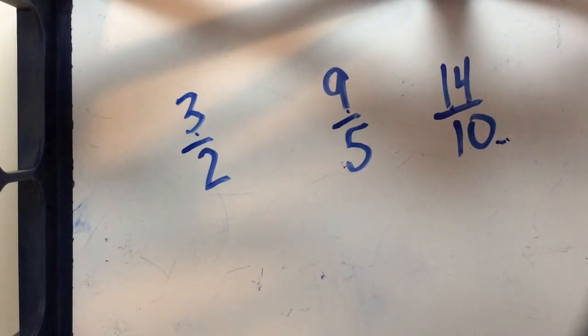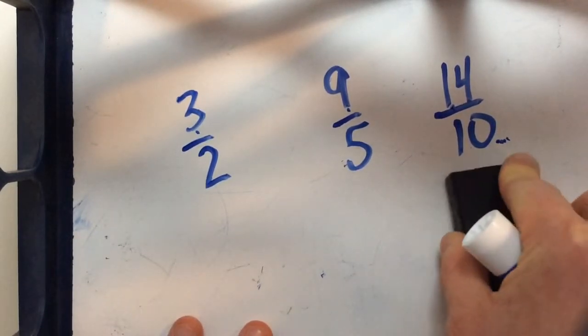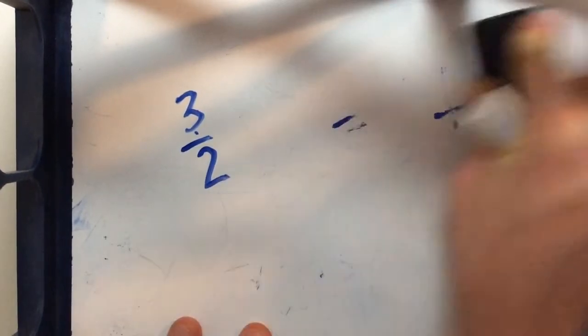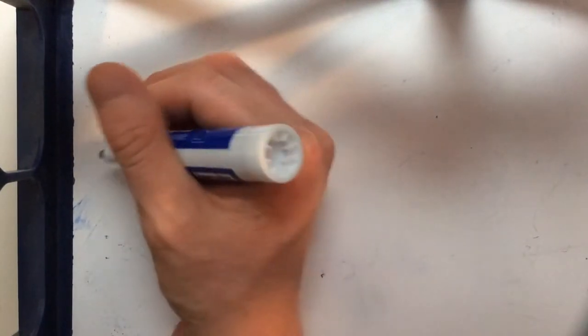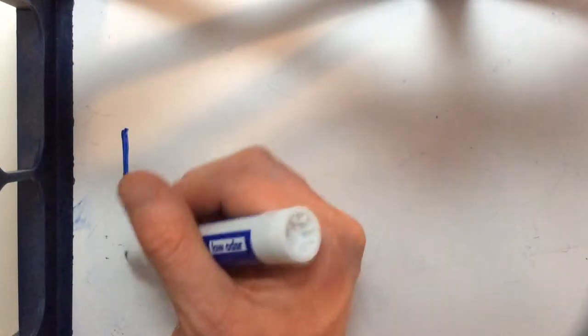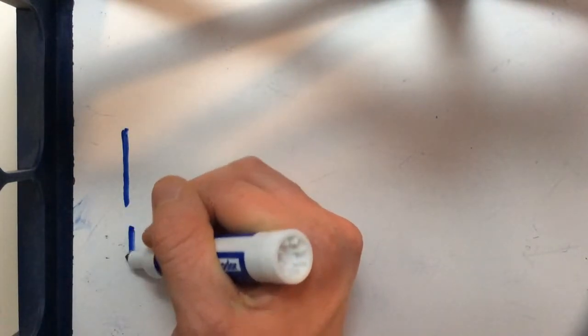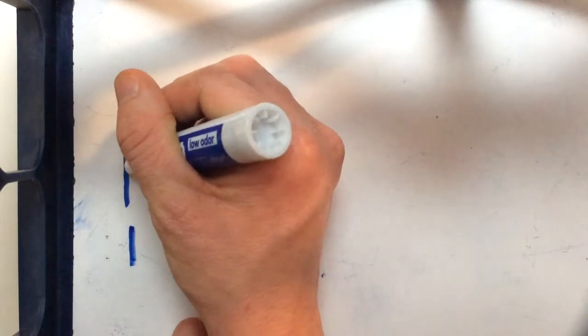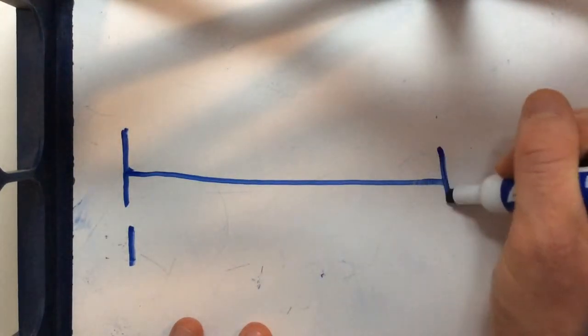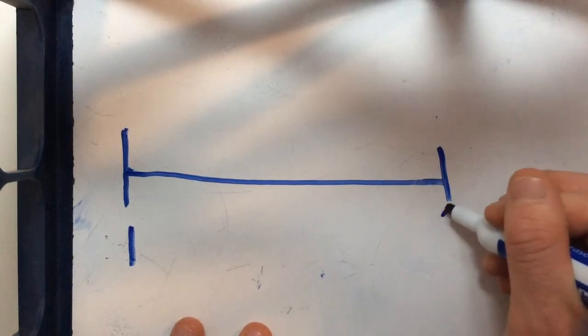So let's go ahead and break each of these down and plot them one at a time so that we can compare them. Now again remember that when we are comparing improper fractions our number line does not start at zero because all of our fractions, if they're improper, will be greater than 1.